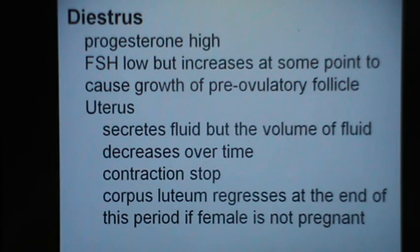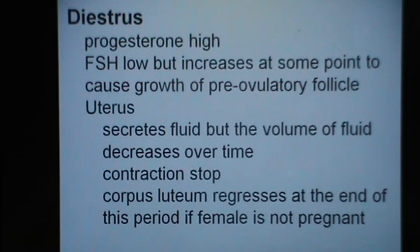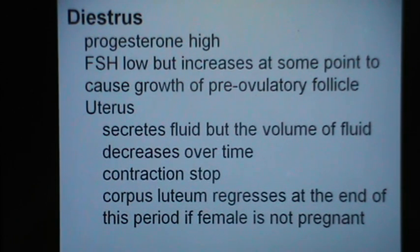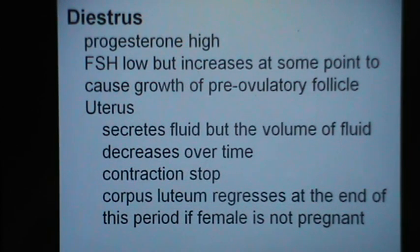During diestrus, the progesterone is high. The FSH is low but increases at some point to cause growth of the preovulatory follicle. The uterus secretes fluid but the volume decreases over time, and contractions stop. The corpus luteum regresses at the end of this period if the female is not pregnant, because of release of prostaglandin F2-alpha from the uterine endometrium.